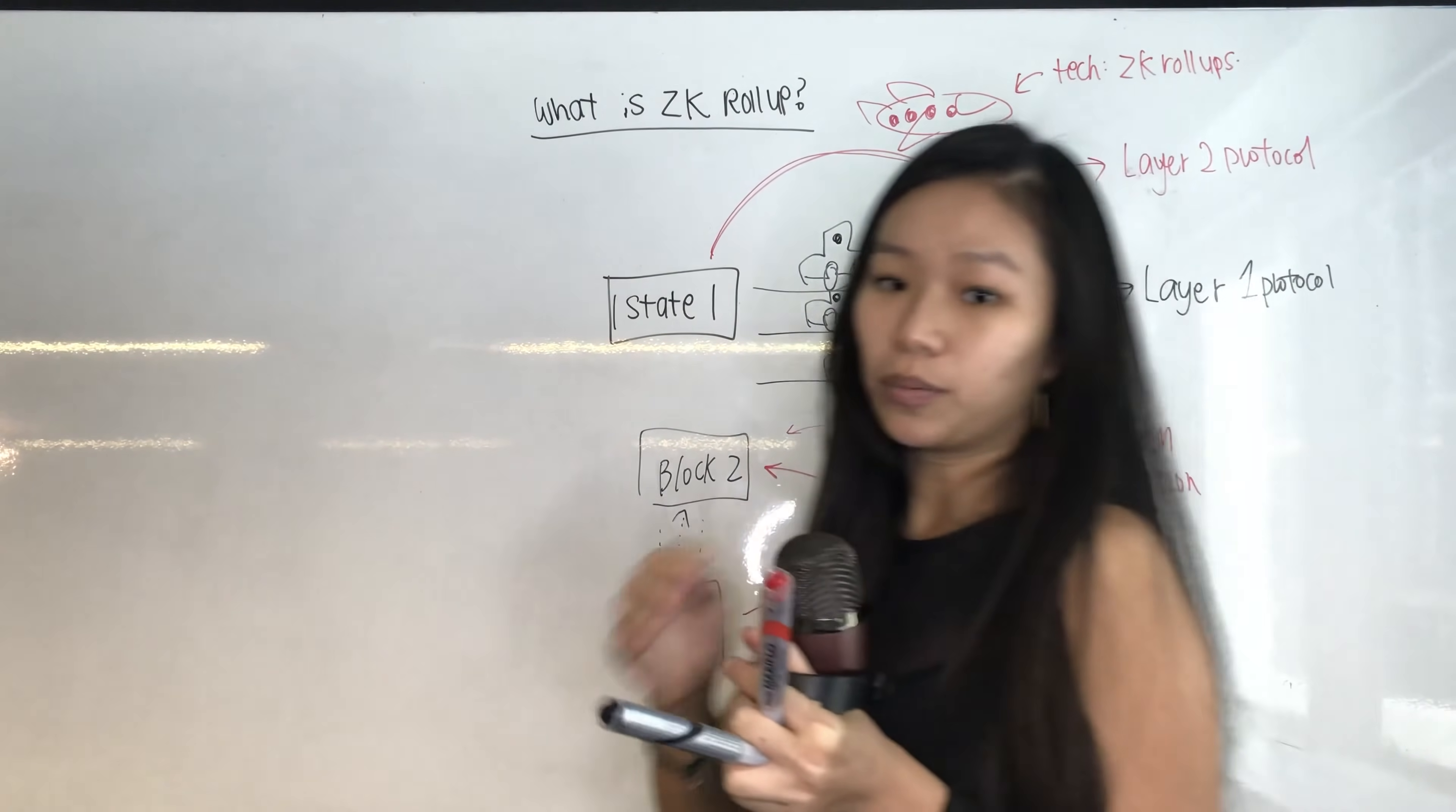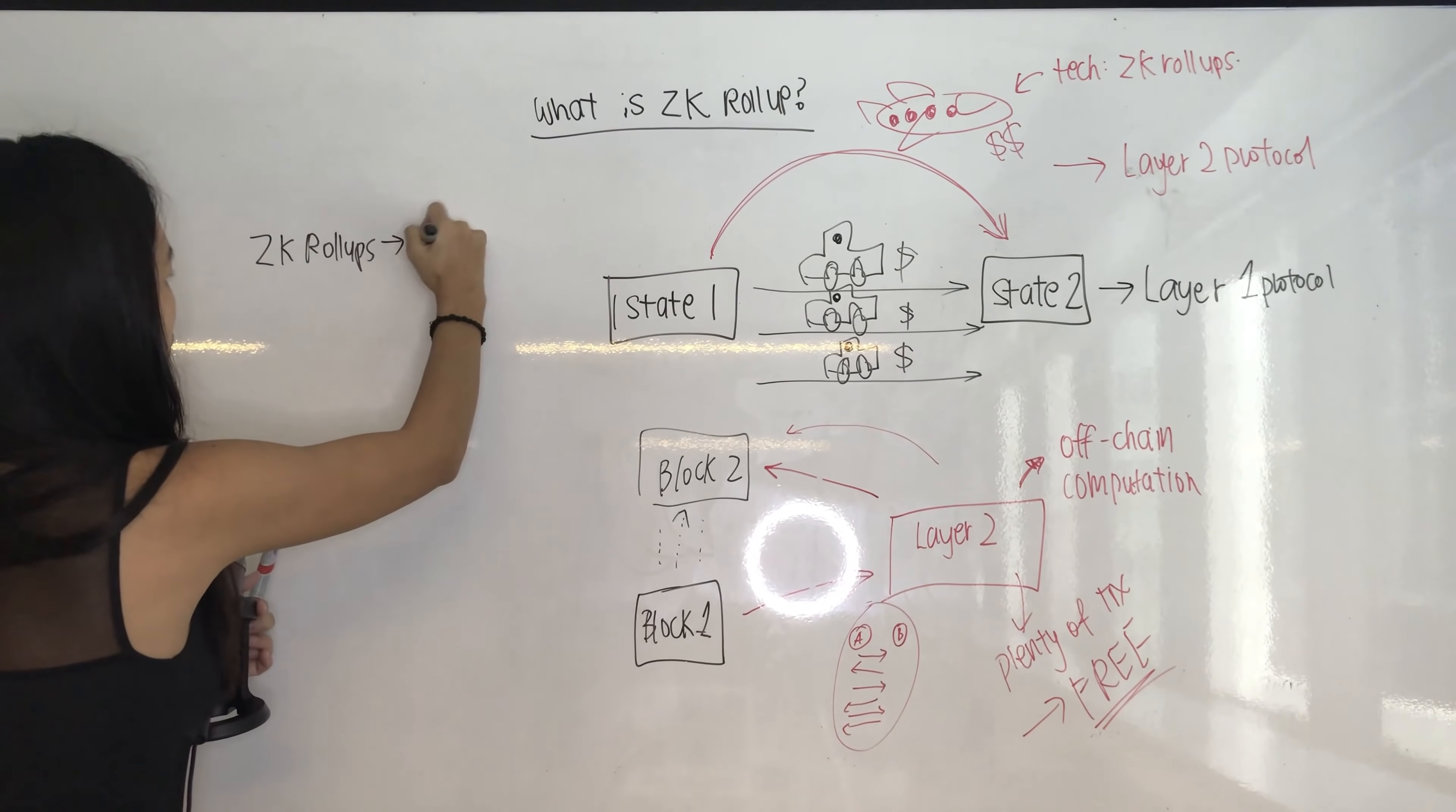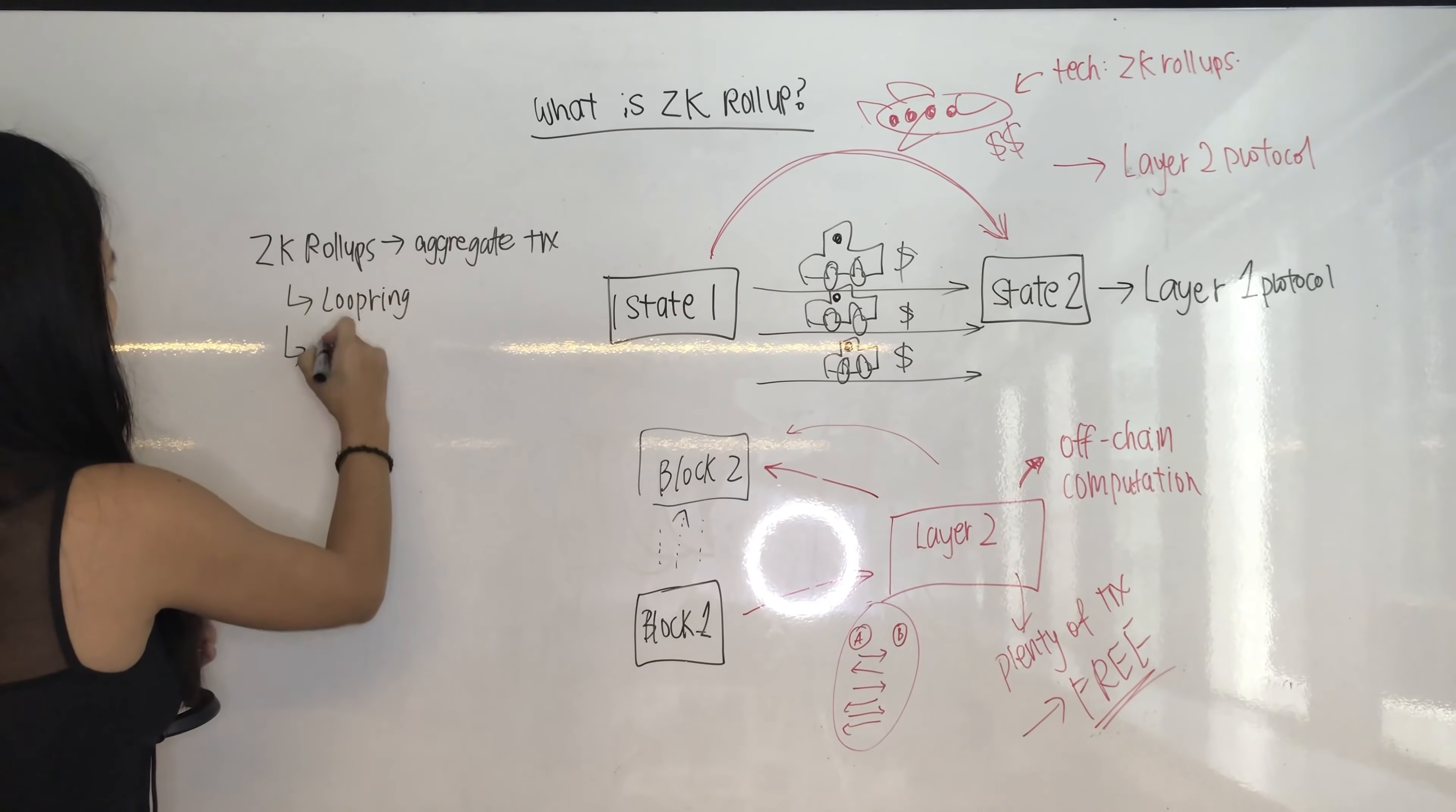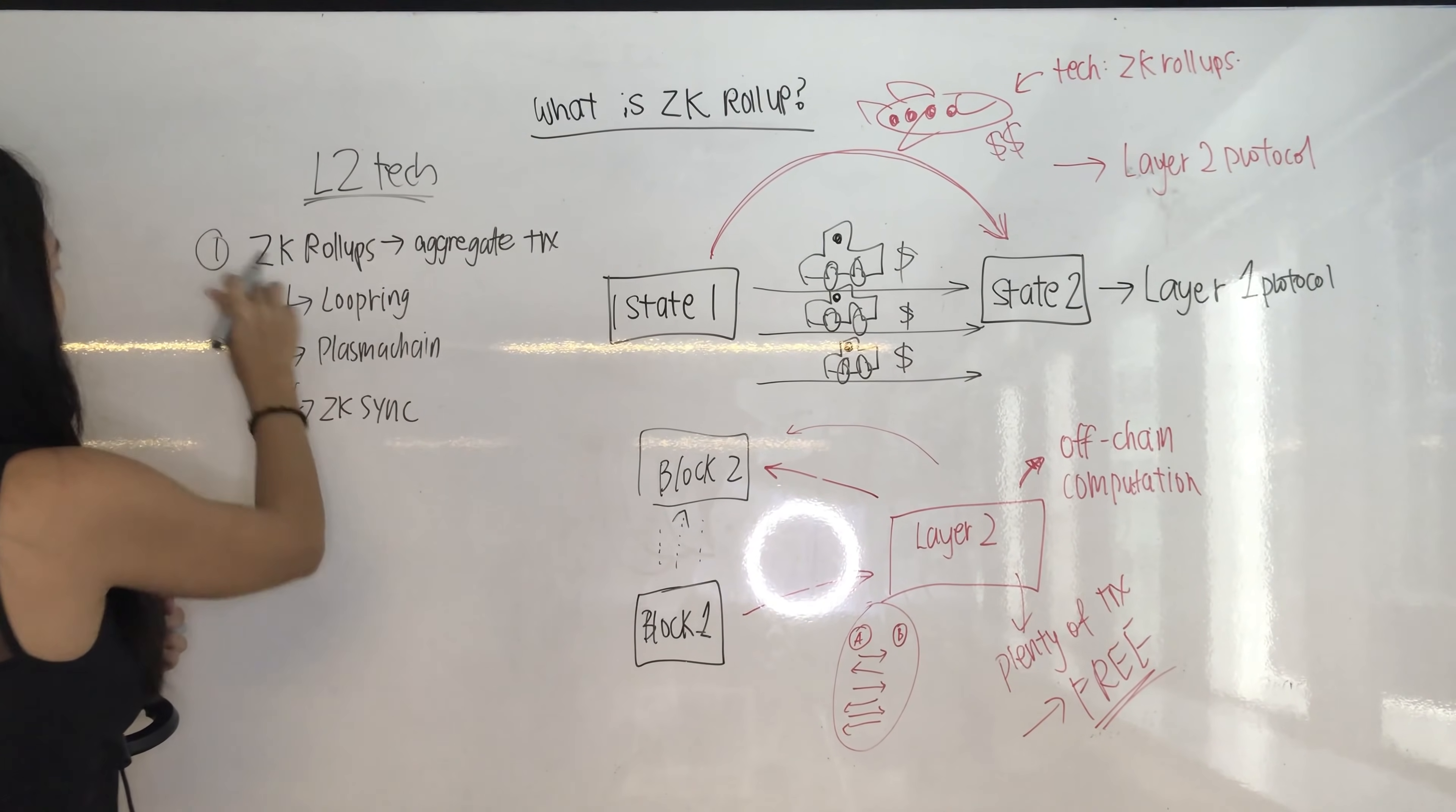Now who are the projects and what are the projects involved that are in the space of layer two scalability? Let's talk about technology first. So the first one is using ZK rollups, because what they do is to aggregate transactions. And companies doing this will be Loopring, you have Plasma chain, you have ZK Sync. This is layer two tech.